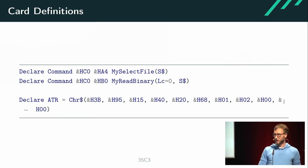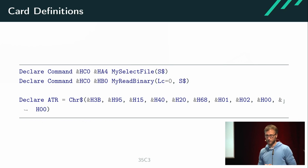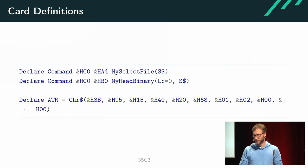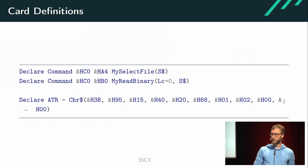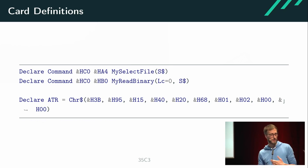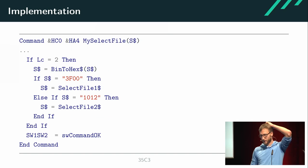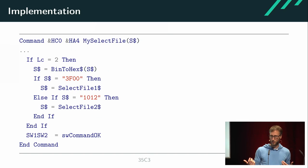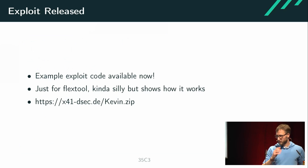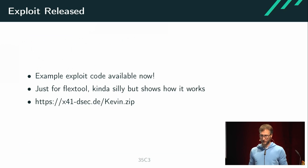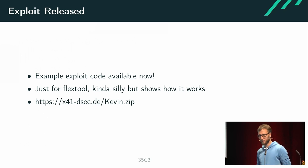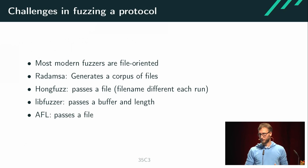In the lower part of the BasicCard code you declare the historical bytes of the ATR — in this case for the OpenSC driver. You also declare functions mapping to APDUs. For example, if you receive a class byte of 0xC0 and instruction byte 0xA4, your custom select_file function is called with the parameters, and you generate whatever response you want. This is the select_file handler where I pass which file the driver wants to select and return a static response. The code is somewhat silly for this demonstration, but it shows how to interact with a smart card driver.